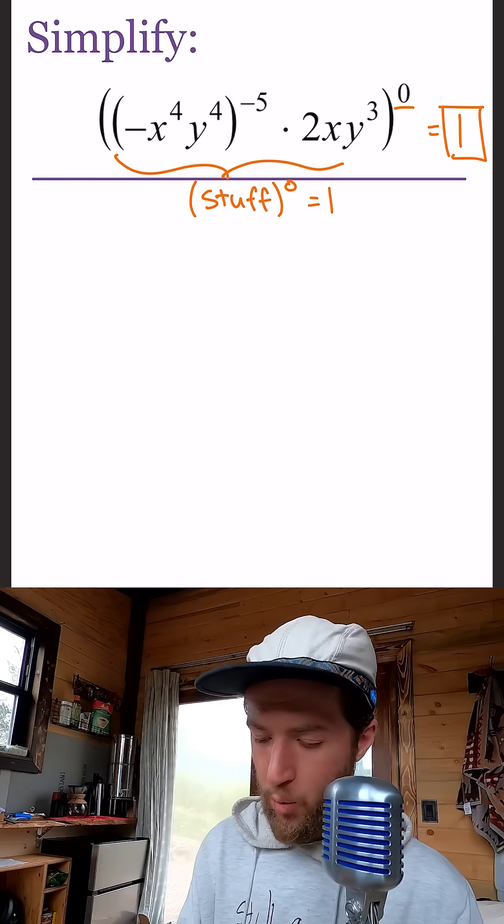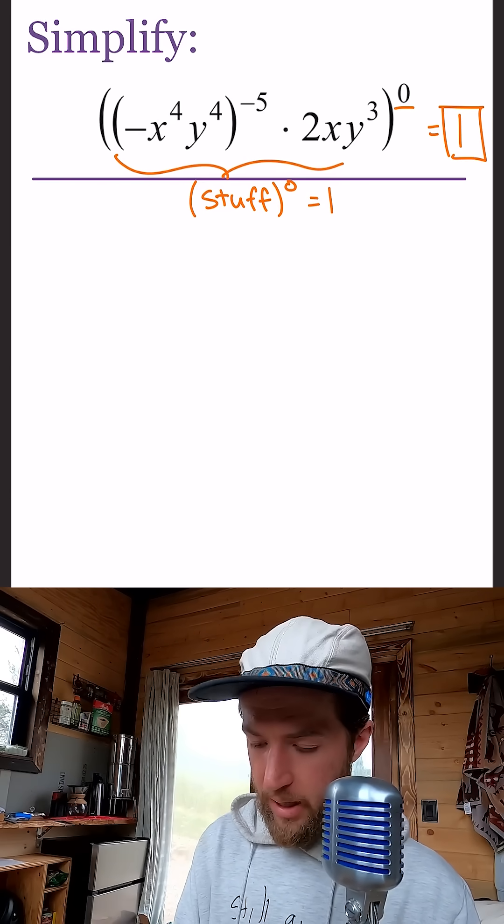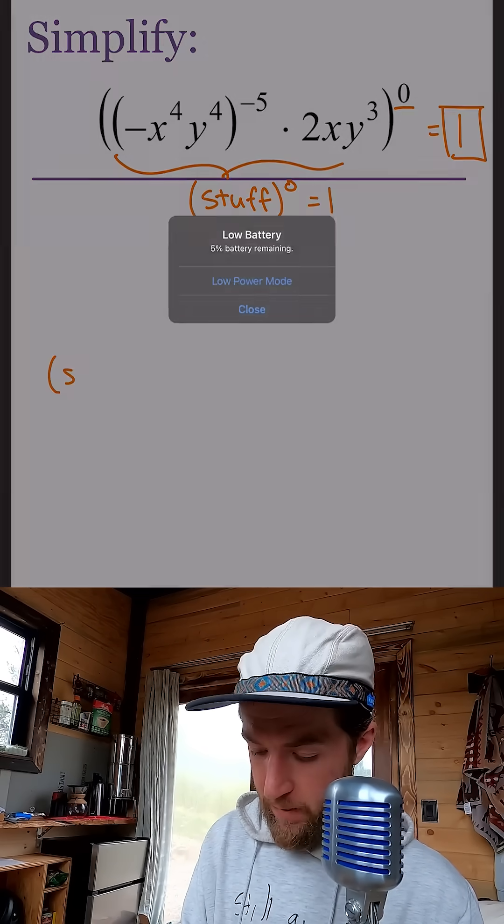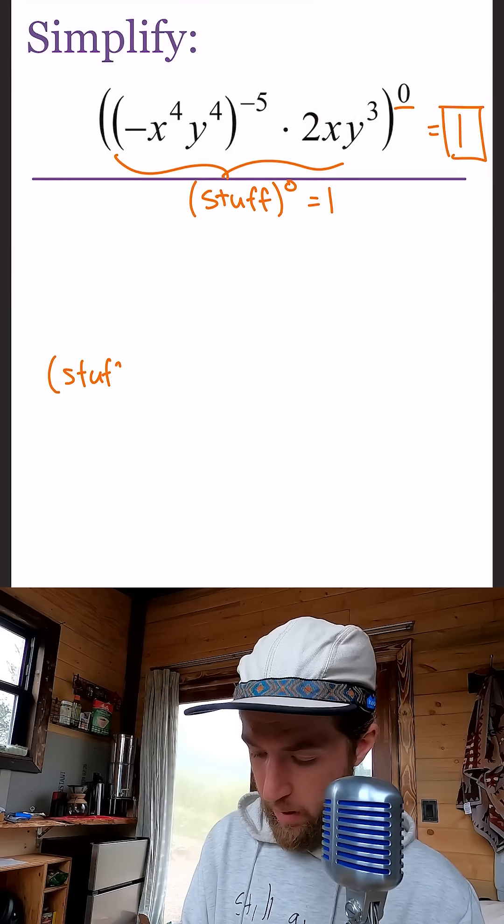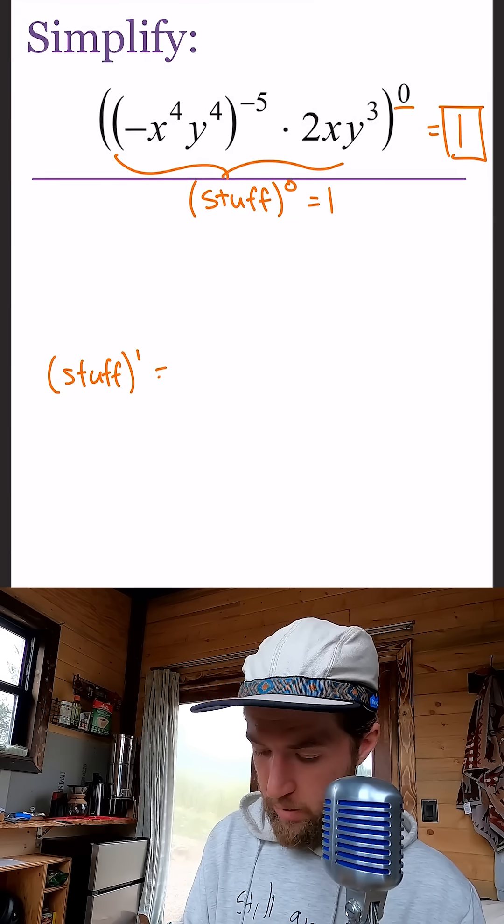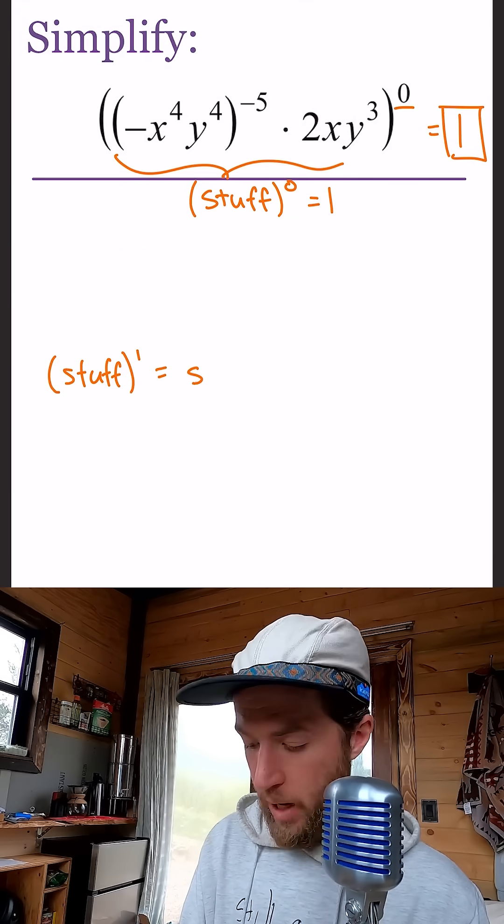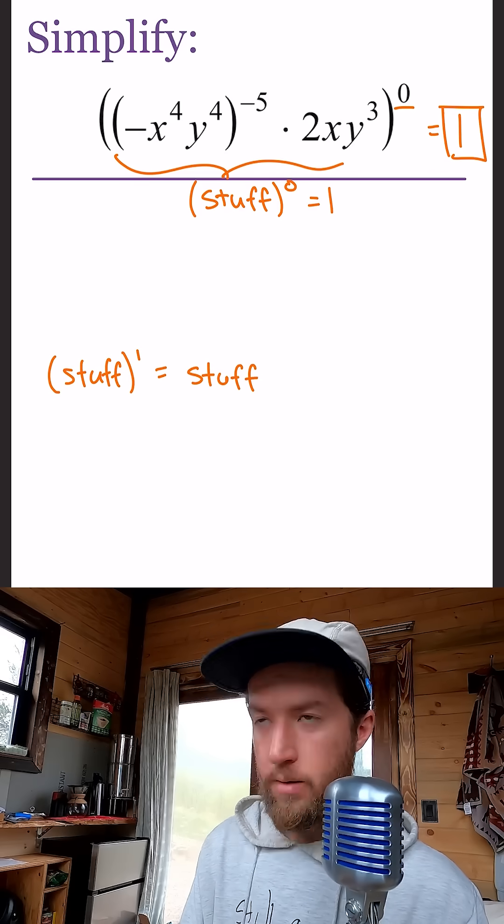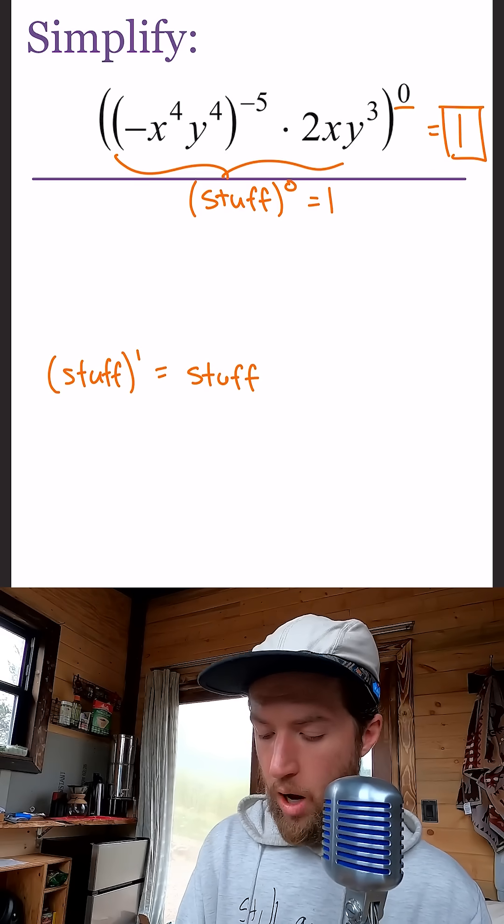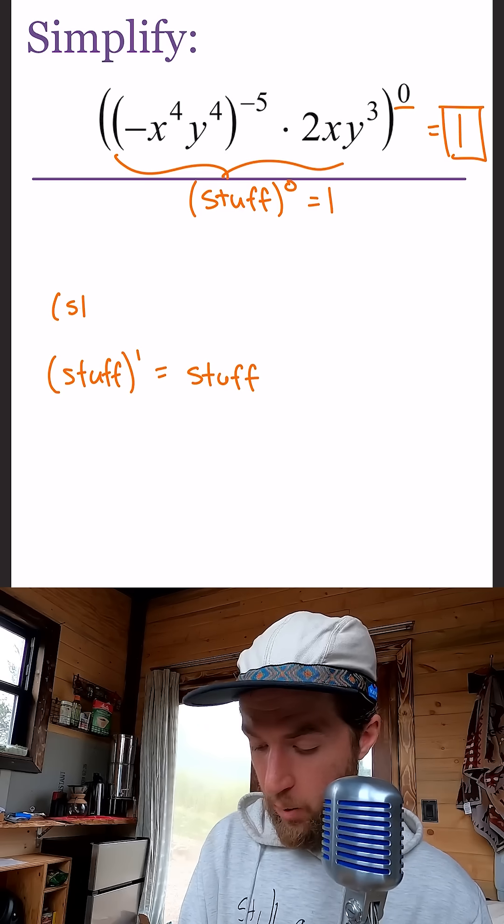How can we see that in a simple way? Let's imagine we had a bunch of stuff raised to the first power. If you have a bunch of stuff and you raise it to the first power, you just have that stuff, right? And if you want to go up to stuff squared, whatever that stuff is, you square it.